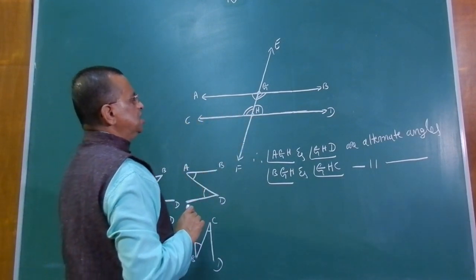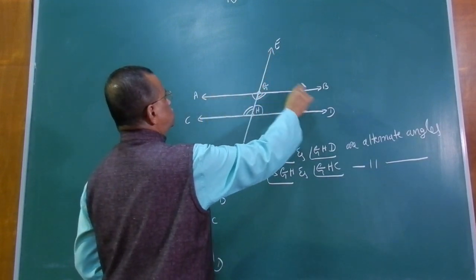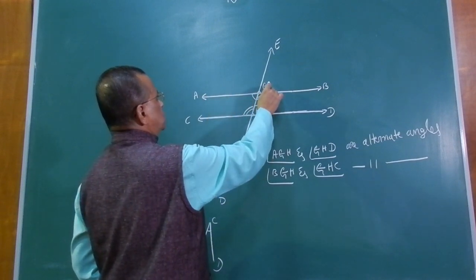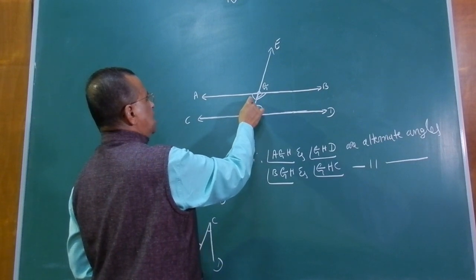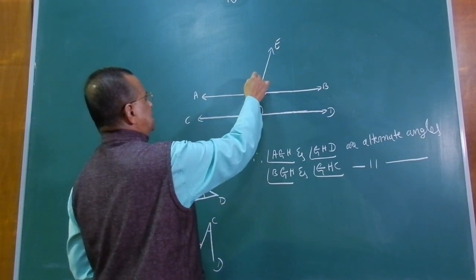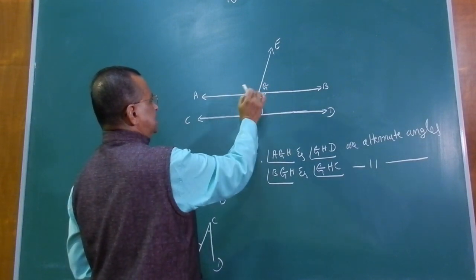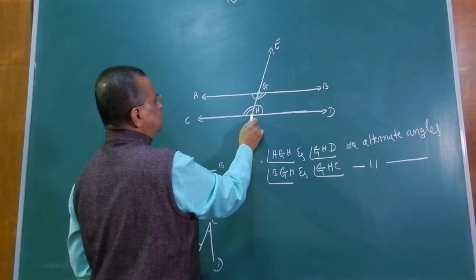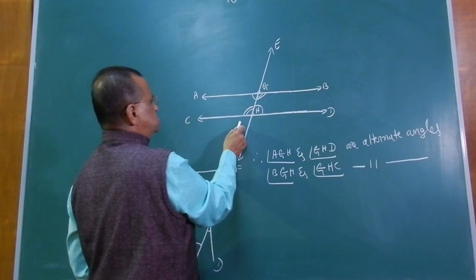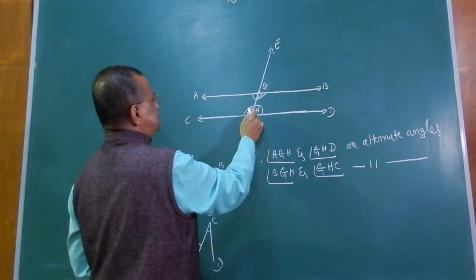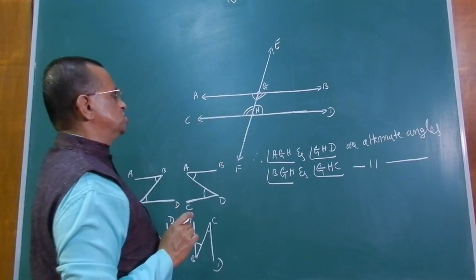For vertically opposite angles: at point G, angle EGB and angle AGH are vertically opposite; angle EGA and angle BGH are vertically opposite. At point H, angle GHD and angle CHF are vertically opposite; angle GHC and angle DHF are vertically opposite.